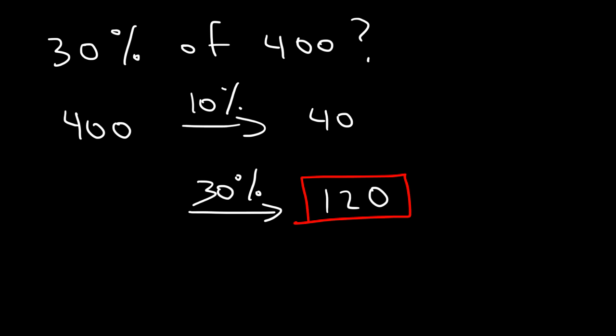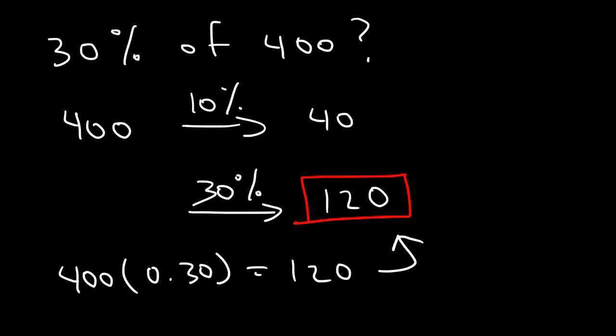If you wish to confirm this answer with your calculator, multiply 400 by the decimal value of 30%. 30% is basically 0.30 as a decimal. 400 times 0.30 is 120. That's a quick way you can check your answer with the calculator to see if you did it correct mentally.